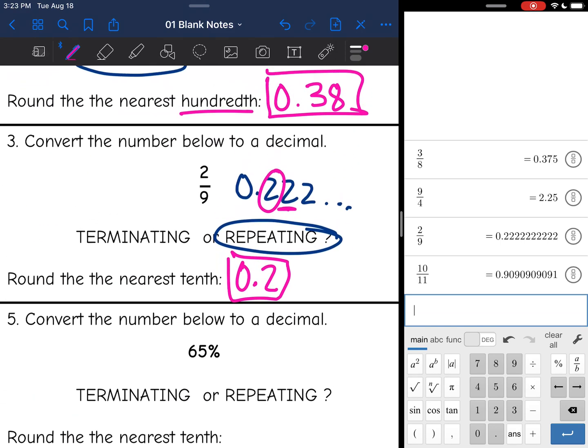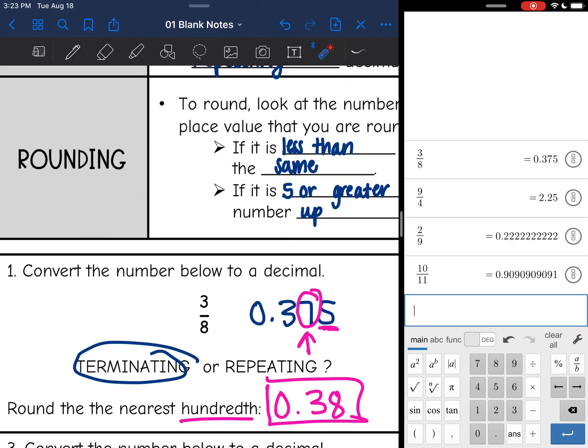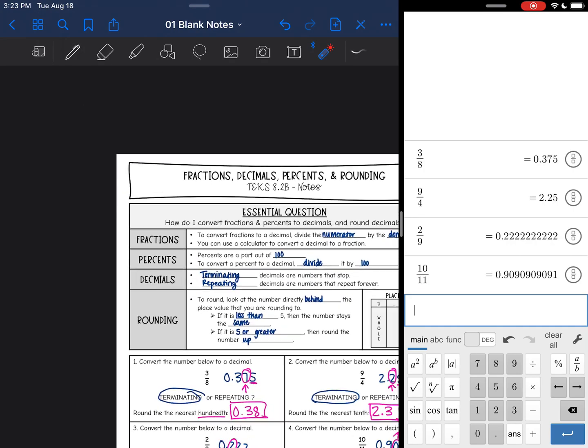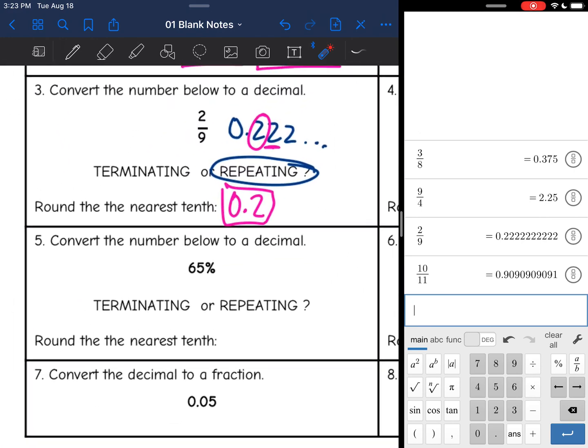Okay, now I have a percent, and I need to convert it to a decimal. So let's go read about percents. Percents, if you remember, are part out of 100. To convert a percent to a decimal, all you're going to do is divide it by 100. And you can use your calculator for that.